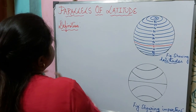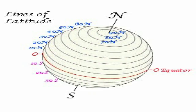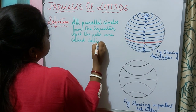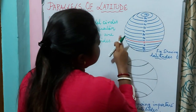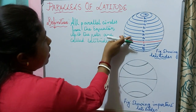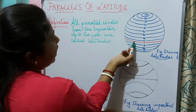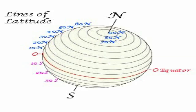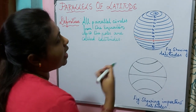What are latitudes? All parallel circles from the equator up to the poles are called latitudes. Here you can see this is the equator, and these are the parallel circular lines running from the equator up to the poles — we call them latitudes. Latitudes are also horizontal lines.